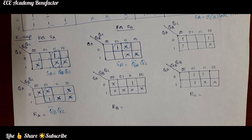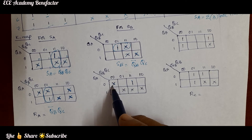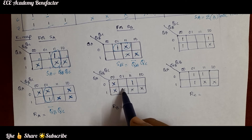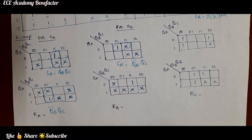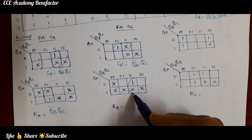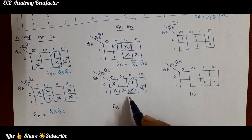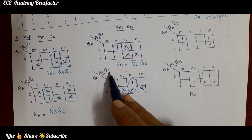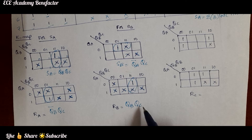Coming to RB: it is 1 at state 3 and do not care at states 0, 4, 5, 6, and 7. We form a pair, and RB simplifies to QB·QC.